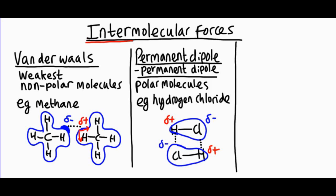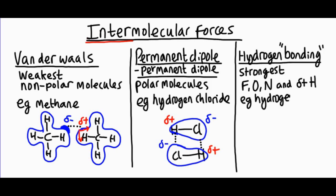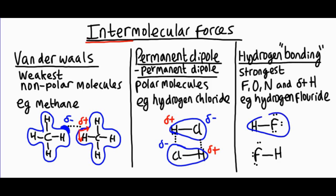The third and final type of intermolecular force is hydrogen bonding. The term 'bonding' is a misnomer — it's not a proper bond. It's still weaker than a covalent bond, but it's the strongest type of intermolecular force. It acts between lone pairs on fluorine, oxygen, or nitrogen atoms and very delta-positive hydrogen atoms. Take hydrogen fluoride (HF) as an example: it's covalently bonded, and fluorine is the most electronegative element, so it really tugs the electrons towards itself. Fluorine has a massive delta minus charge, leaving the hydrogen very delta plus, and the attraction between that very delta plus hydrogen and the lone pairs on fluorine is called hydrogen bonding.